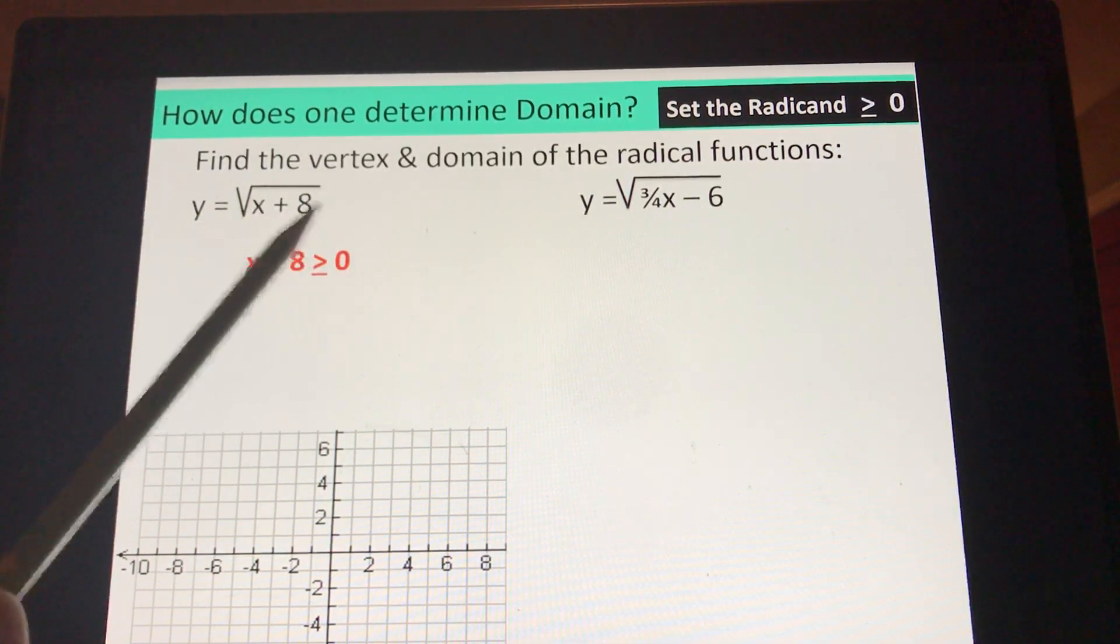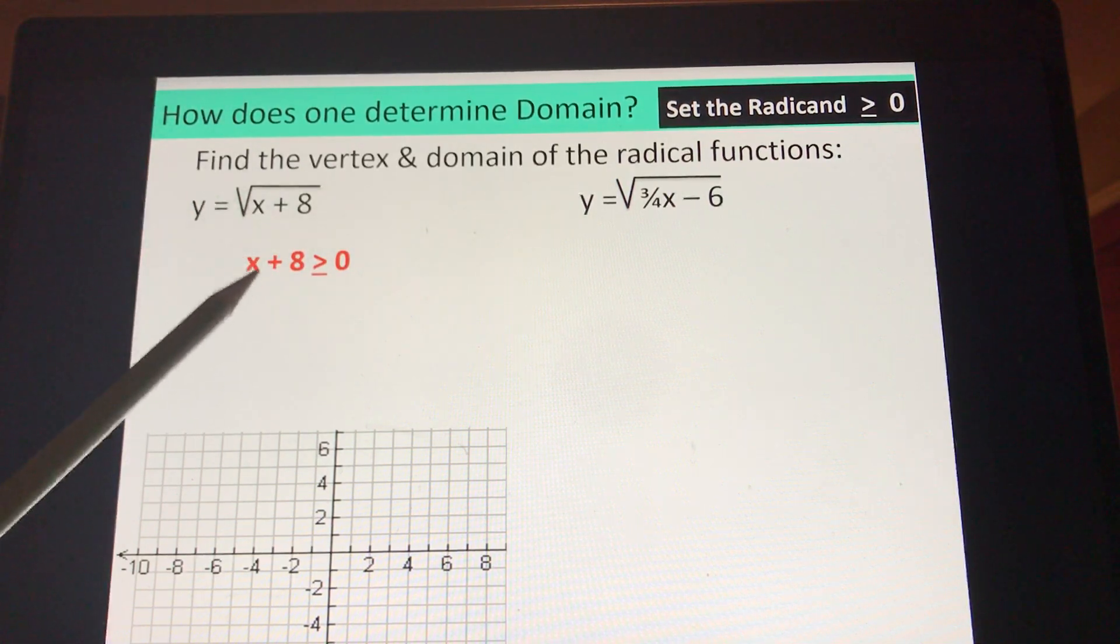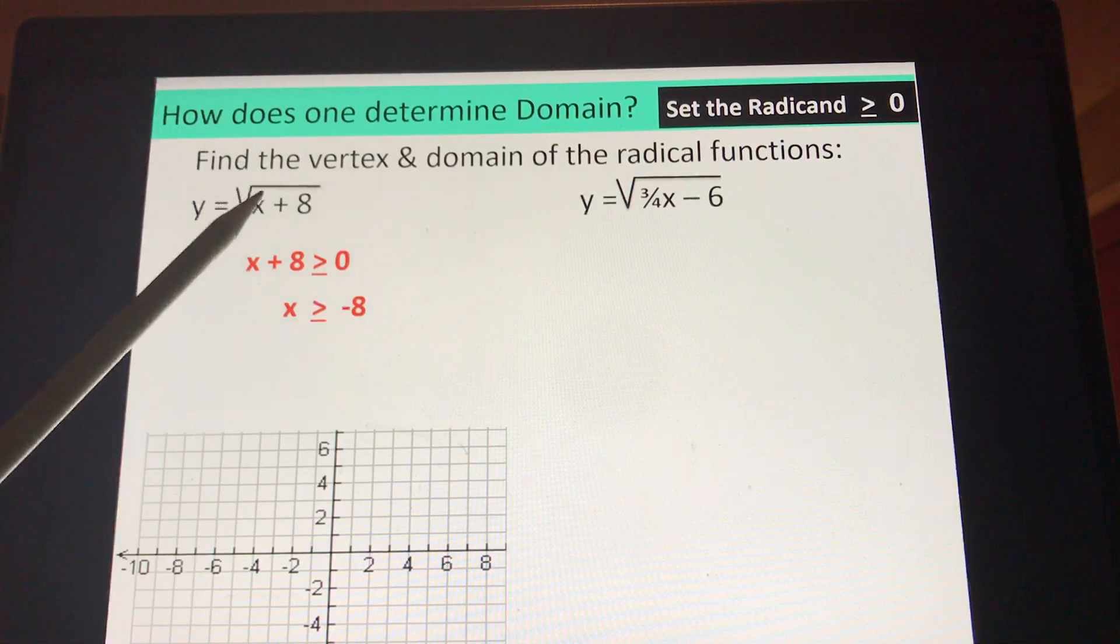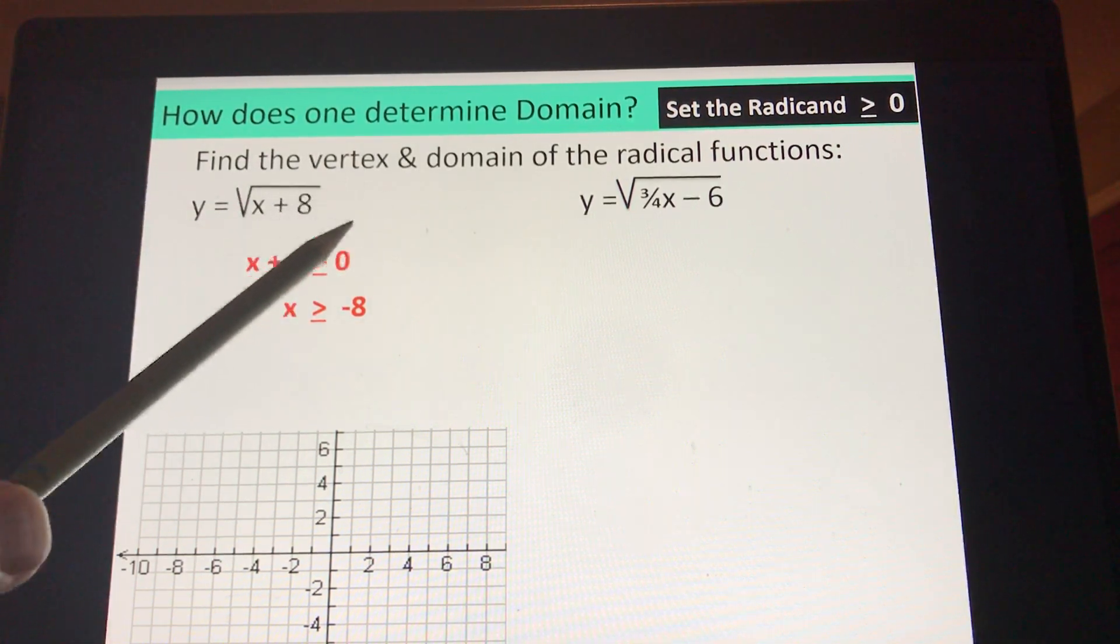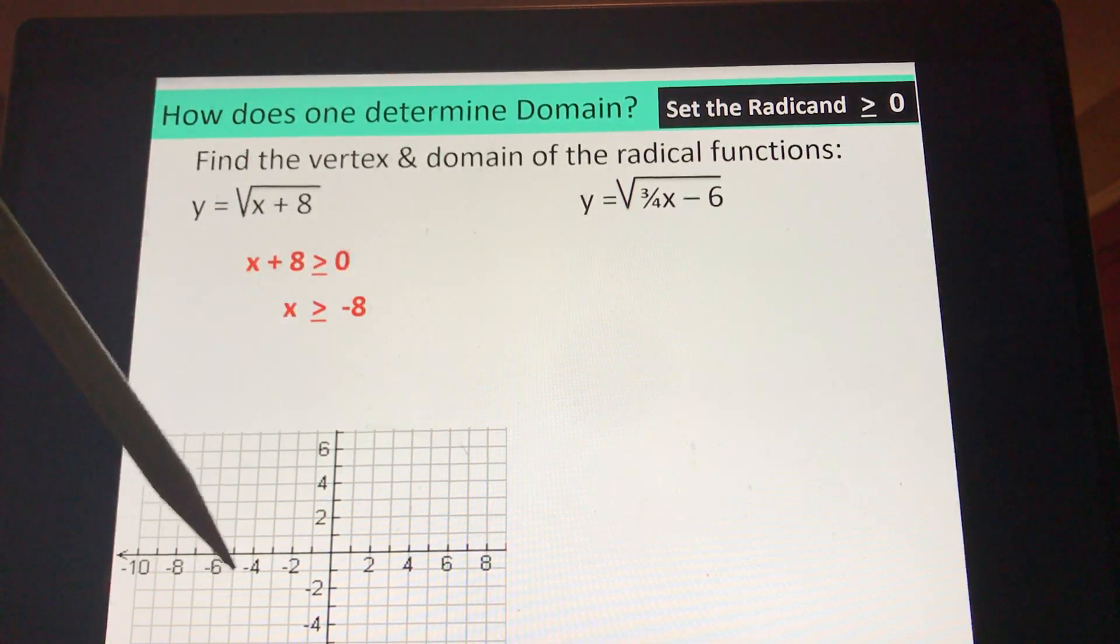That's basically telling you something about the domain and something about the vertex. Whatever this is has to be positive, has to be greater than or equal to zero. Subtract the 8 over and you know x has to be greater than or equal to negative 8. You need a number to the right over here from negative 8. We can't go further down here; it would cause this to still be negative.